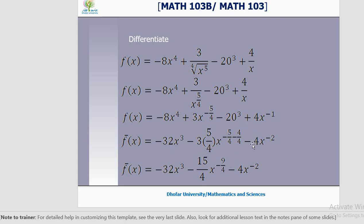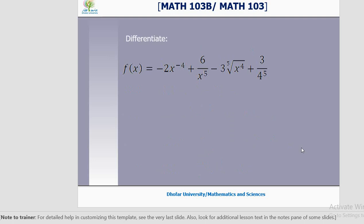The derivative of the constant minus 20 cubed is 0. For 4x power minus 1, n equals minus 1, so 4 into minus 1 is minus 4 into x power minus 2. The last step is algebra — you can write the powers as minus 9 by 4 and minus 2. Your differentiation is only one line; everything else is algebra. Do this example on your own and we will discuss it in class. Thank you for listening.